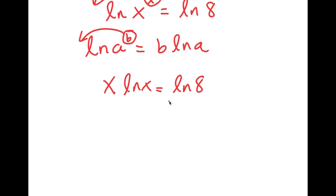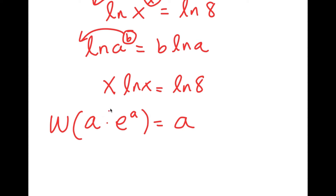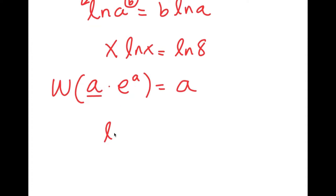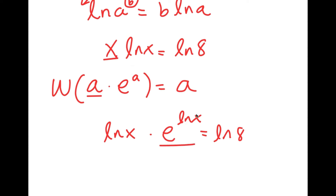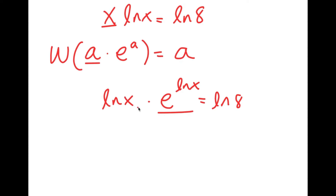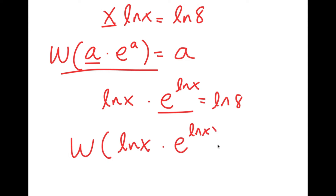From here, I'll use the Lambert W formula, which states that W of (a times e to the power of a) equals a. I'm going to rewrite the equation as ln(x) times e to the power of ln(x) equals ln(8), because x is the same thing as e to the power of ln(x). Now I can apply the Lambert W function to both sides: W of ln(x) times e to the power of ln(x) equals W of ln(8), which simplifies to ln(x) equals W of ln(8).